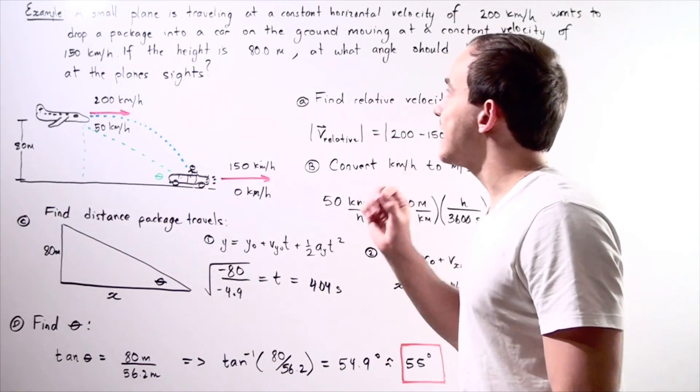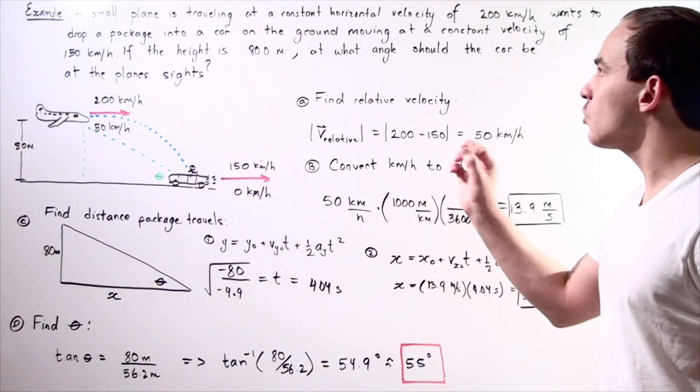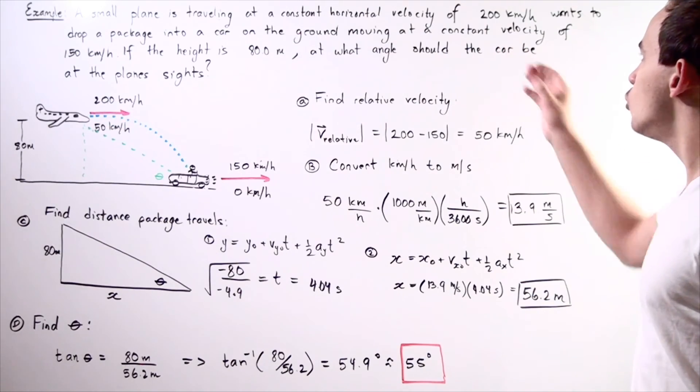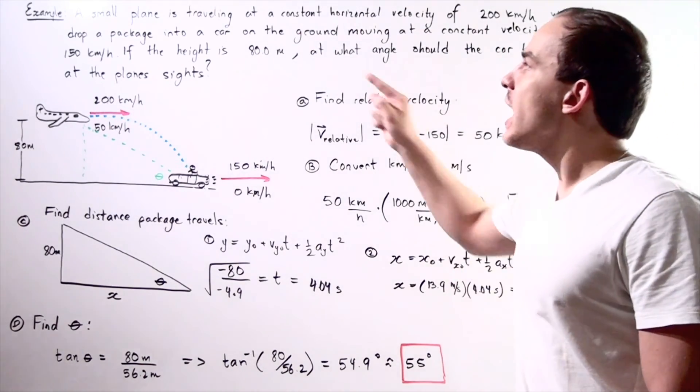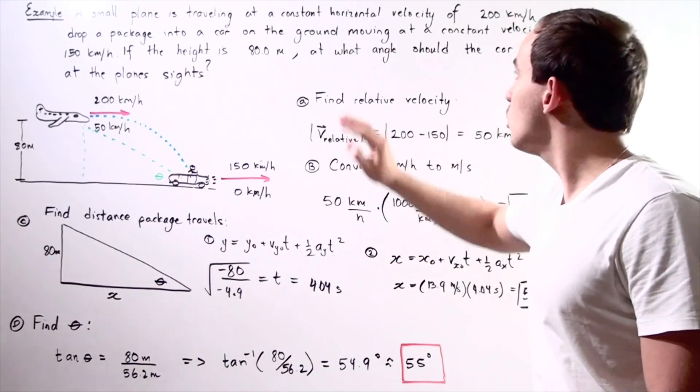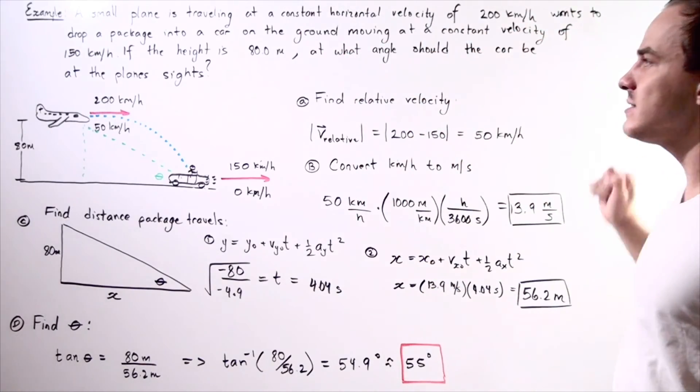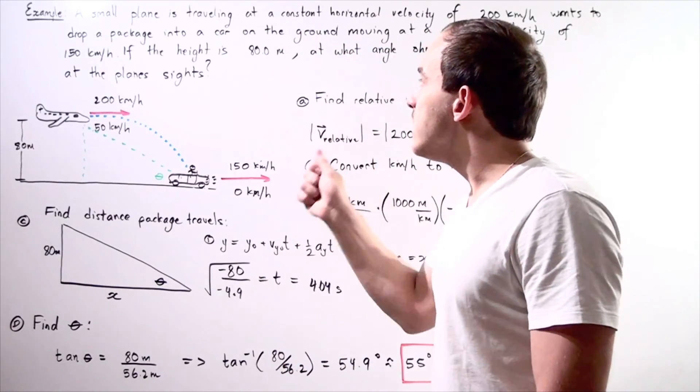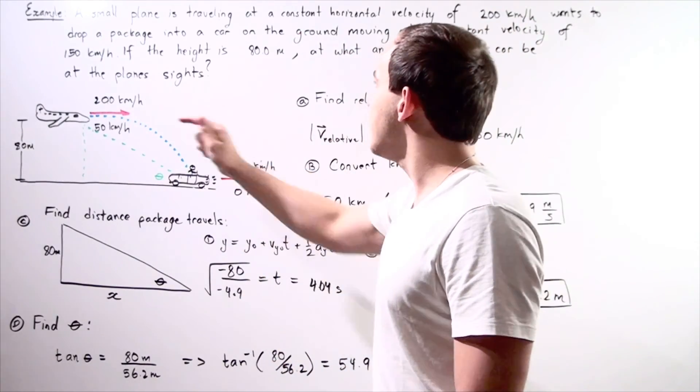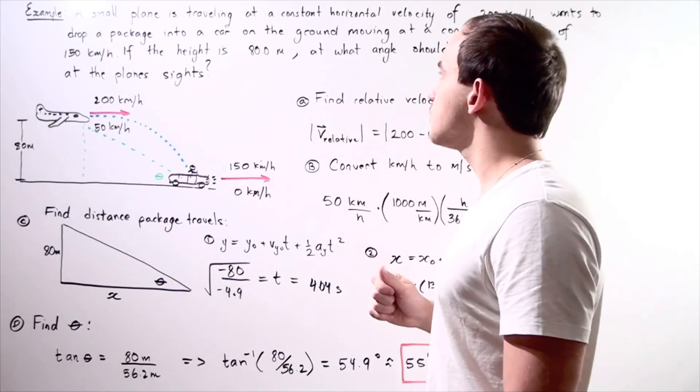Suppose a small plane that is traveling at a constant horizontal velocity of 200 kilometers an hour wants to drop a package into a car on the ground moving at a constant velocity of 150 kilometers an hour. Now if the height between the plane and the car is 80 meters,